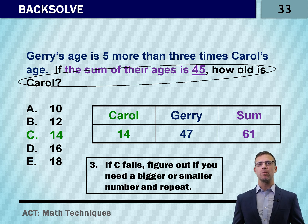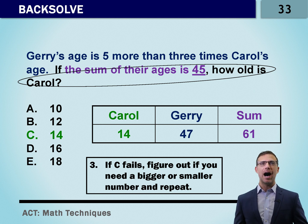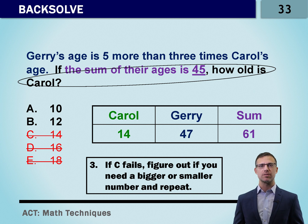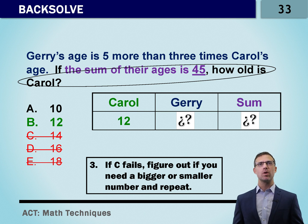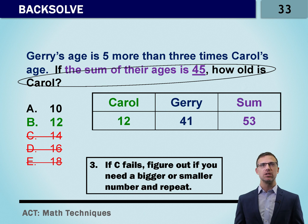If our sum is 61 and we want to get to 45, do we want to make that number bigger or smaller? Obviously we want to make that number smaller. That means not only is C wrong, but D and E are also wrong. We're now down to just two answer choices. Let's take a look at B. If Carol is 12, we check how old Jerry is. Jerry is five more than three times 12. Three times 12 is 36, five more than that is 41. We put those together, our sum is 53. It's still too high. That means our answer has to be 10.